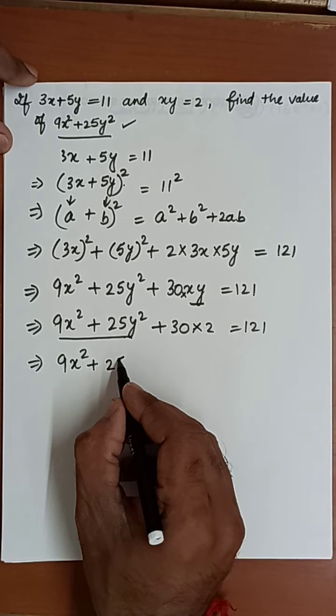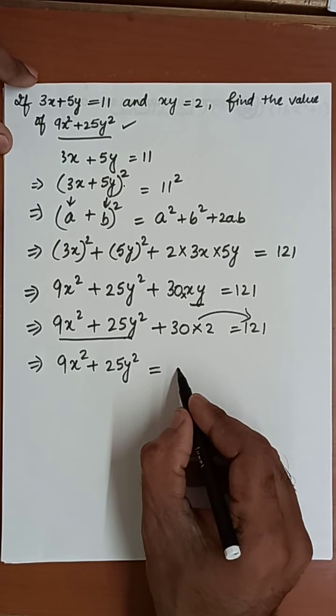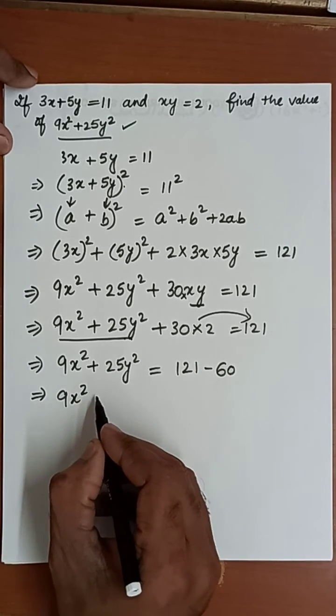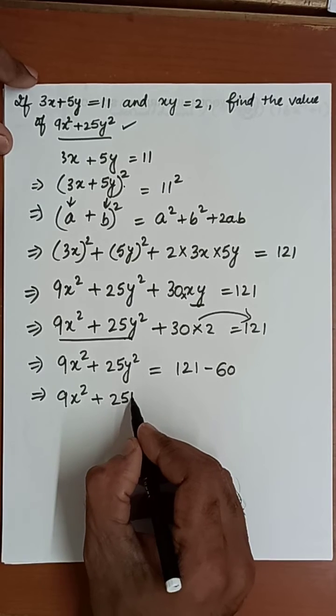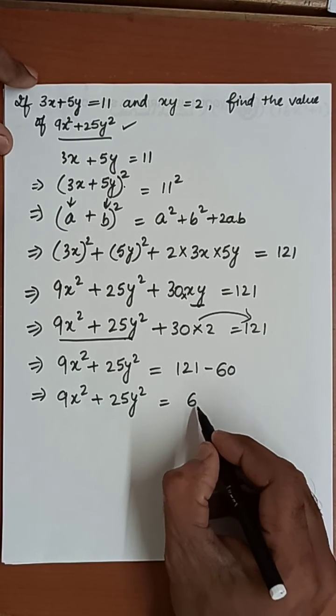9x square plus 25y square plus 60 will be transposed to the other side, so it will be minus 60. Now we will get our value of 9x square plus 25y square, which equals 61.